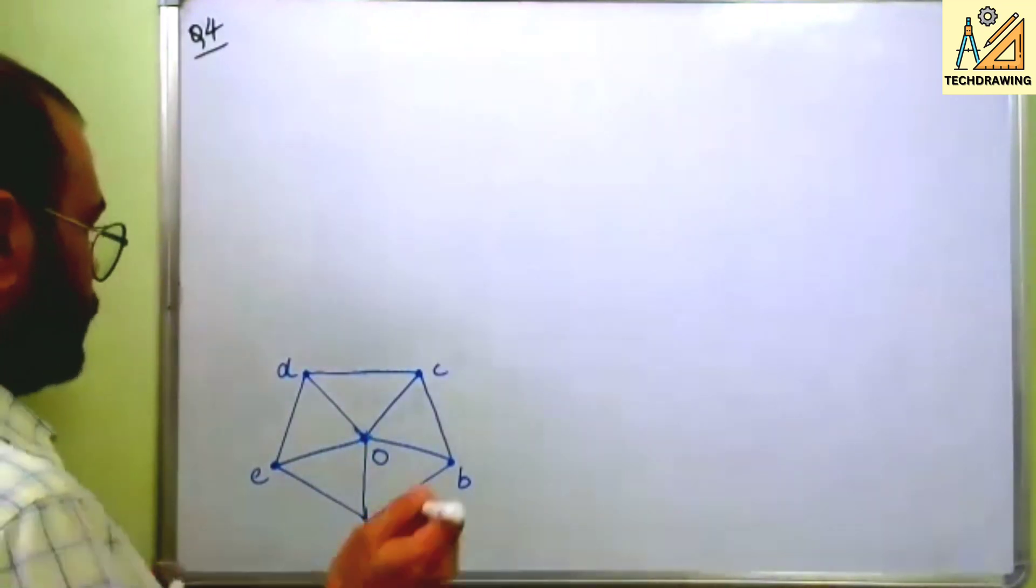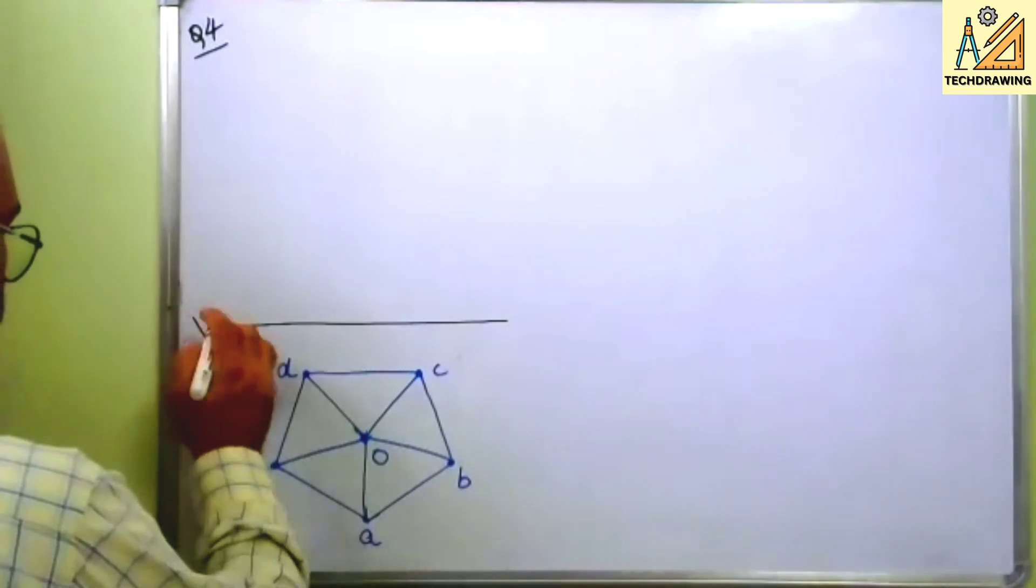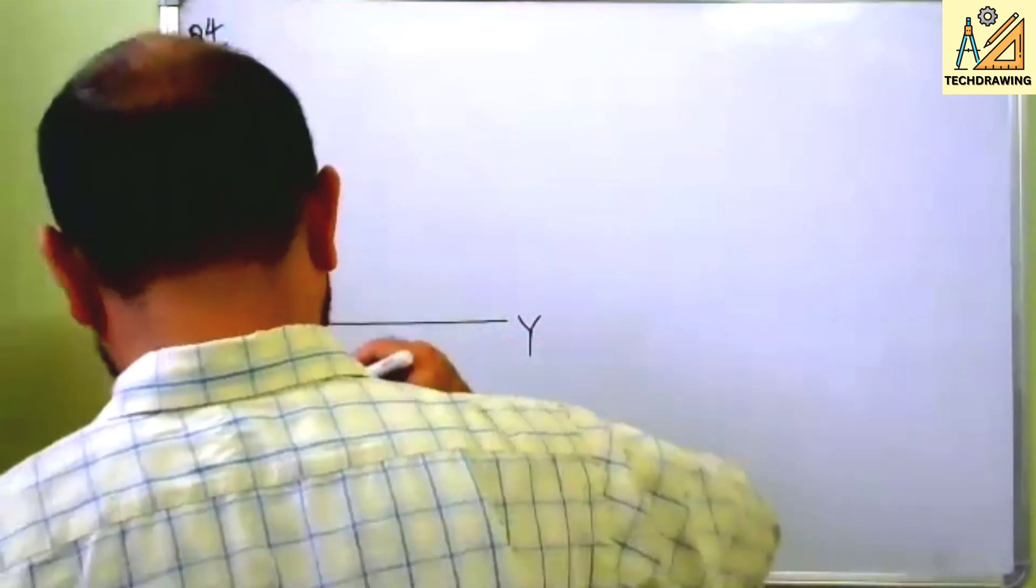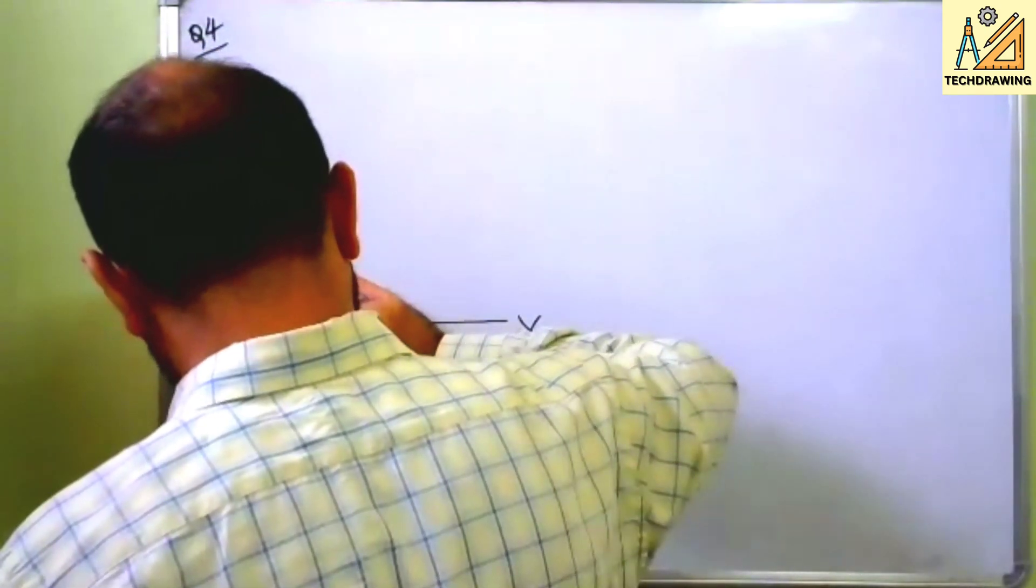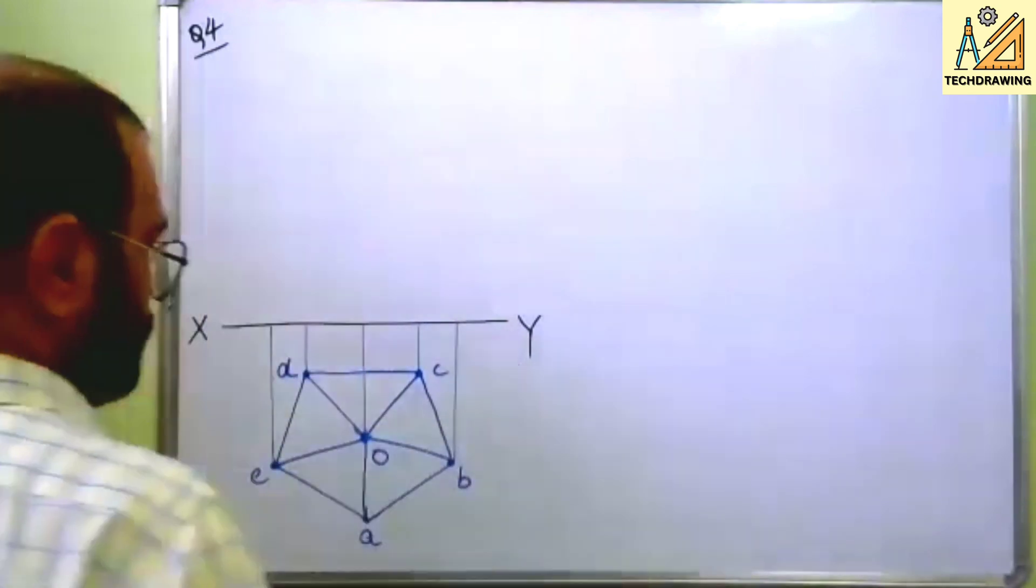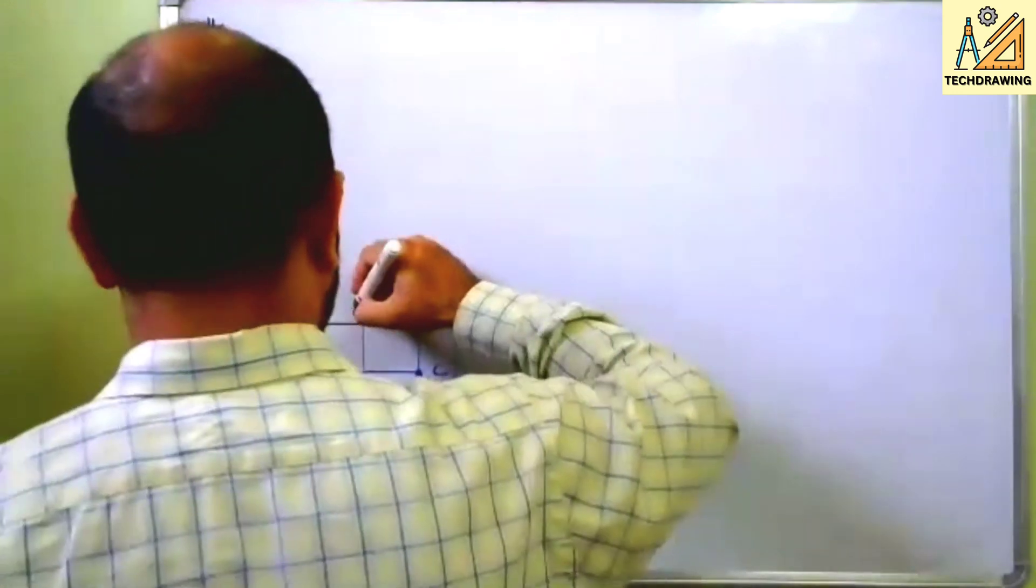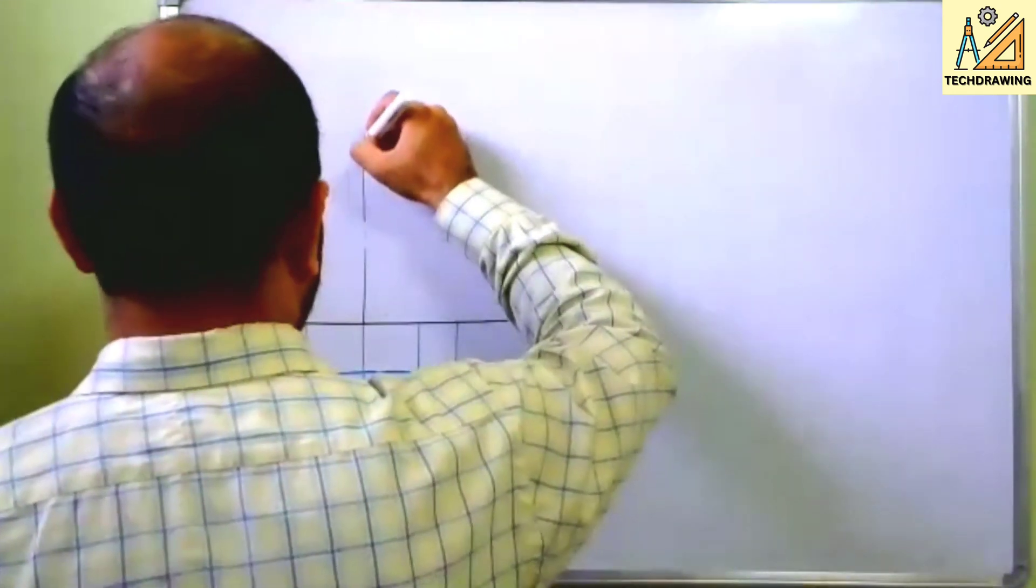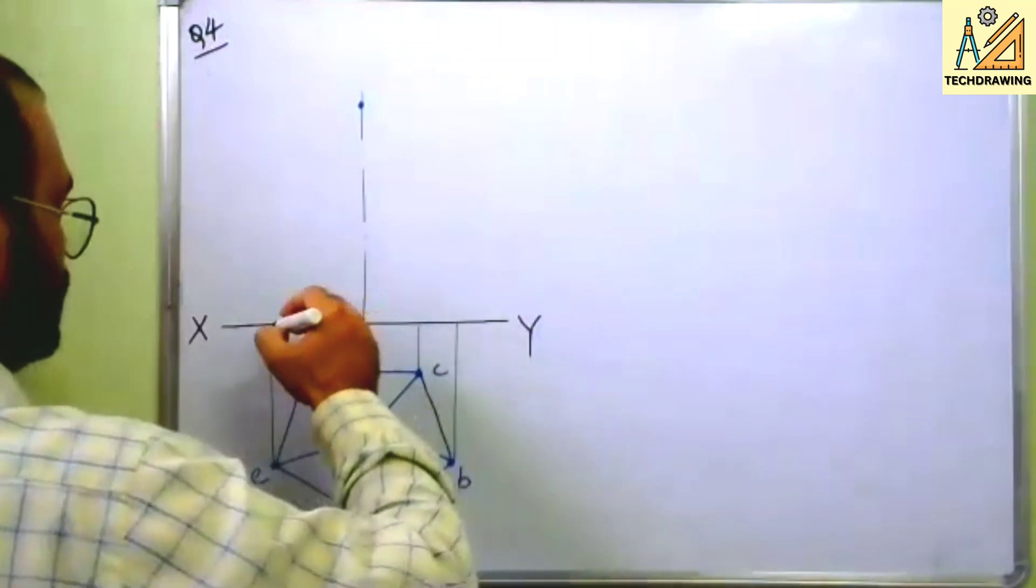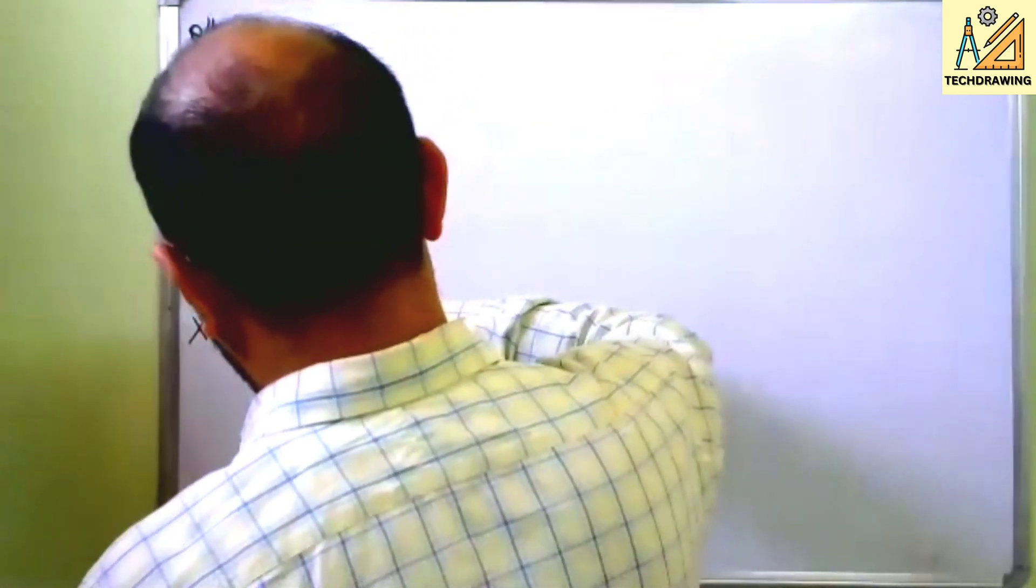Now let us draw the front view. This is X, this is Y, draw the projection lines like this. Height is 60. Let us say this is 60.